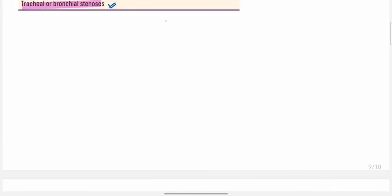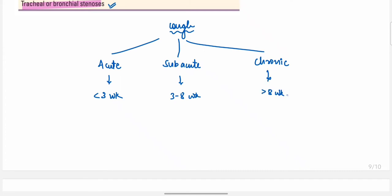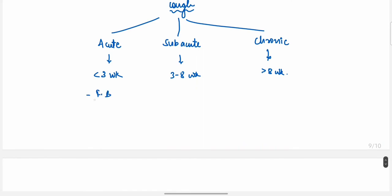According to duration, cough is divided into three types: acute, subacute, and chronic. Acute cough is less than 3 weeks, subacute cough is 3 to 8 weeks, and chronic cough is more than 8 weeks. Causes of acute cough include foreign body, respiratory tract infection, aspiration, and inhalation of noxious substances.